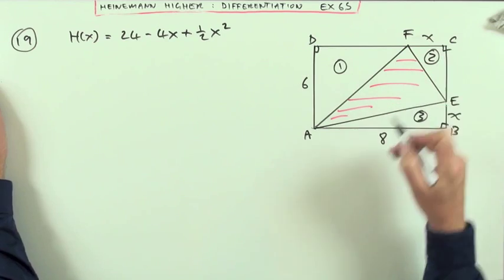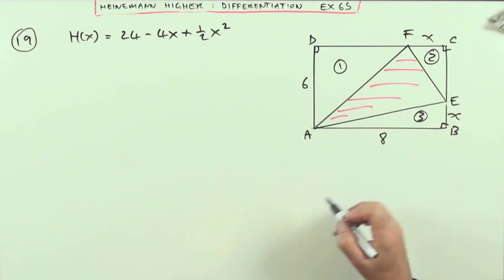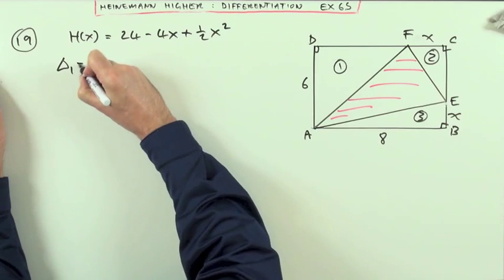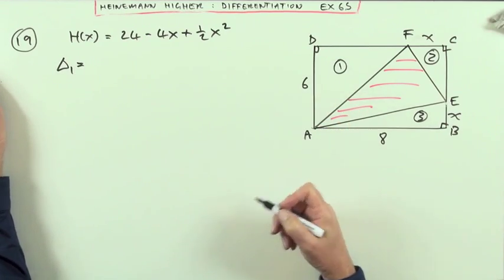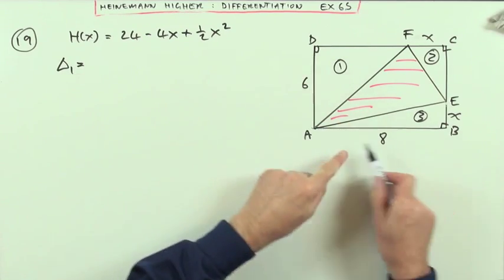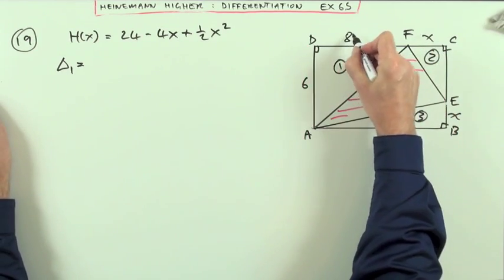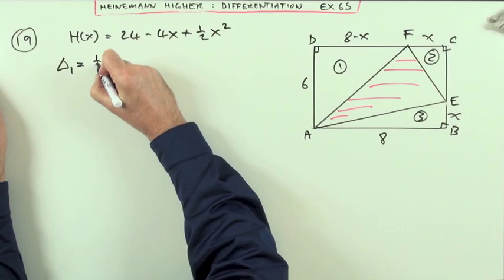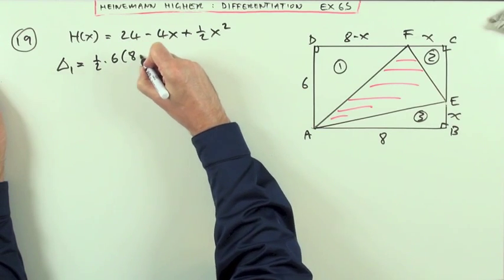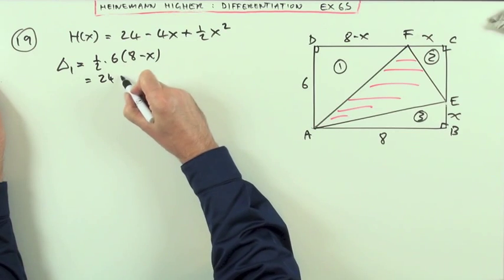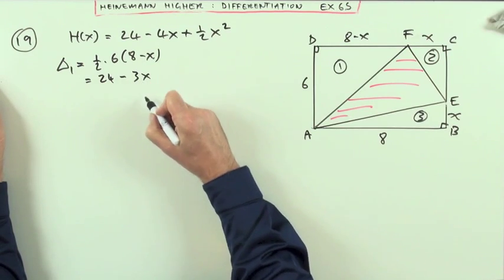And 1, 2 and 3 are all right-angled triangles, so it's a simple half base times side. So for each of them, I would just work out their areas. Triangle 1 here, one side is 6, the other side would be 8 minus X, so that length is 8 minus X. Triangle 1 is going to be a half of 6 times 8 minus X. I'll just multiply out 3 times that, so it's going to be 24 minus 3X.